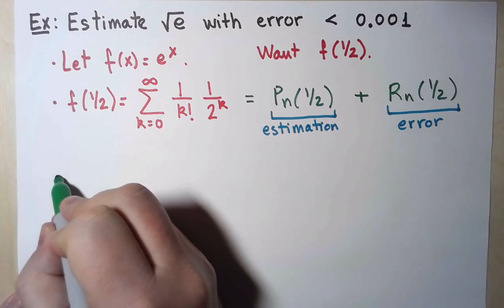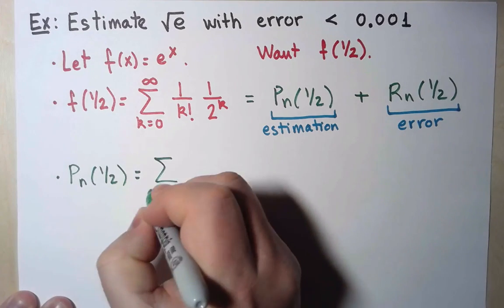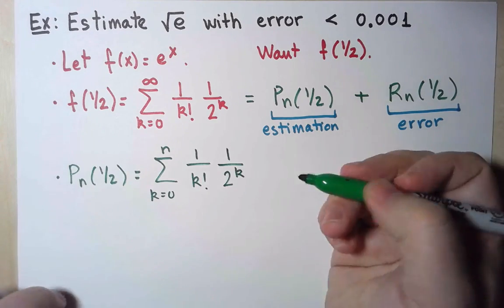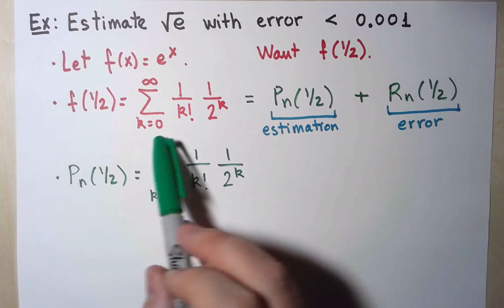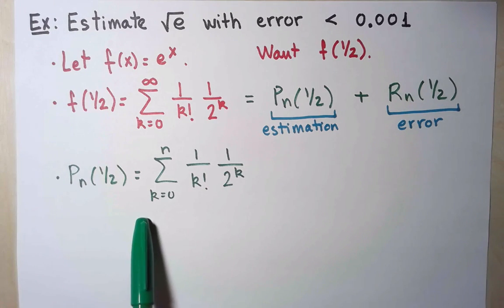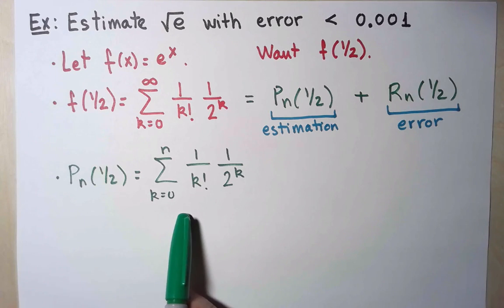To make it more explicit, this is my estimation. It's the same infinite sum, but truncated, so only a finite sum. And this will be easy to compute for any value of n. This is just a finite sum.